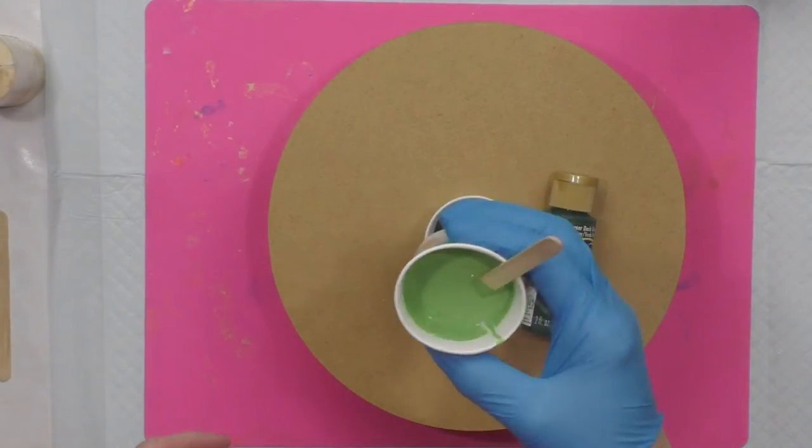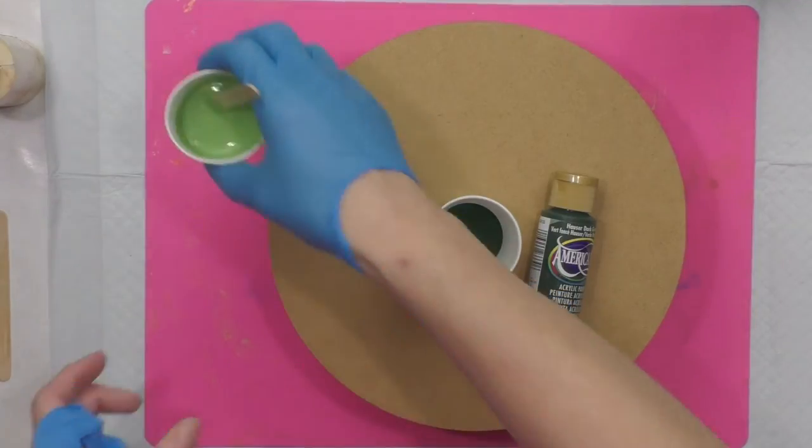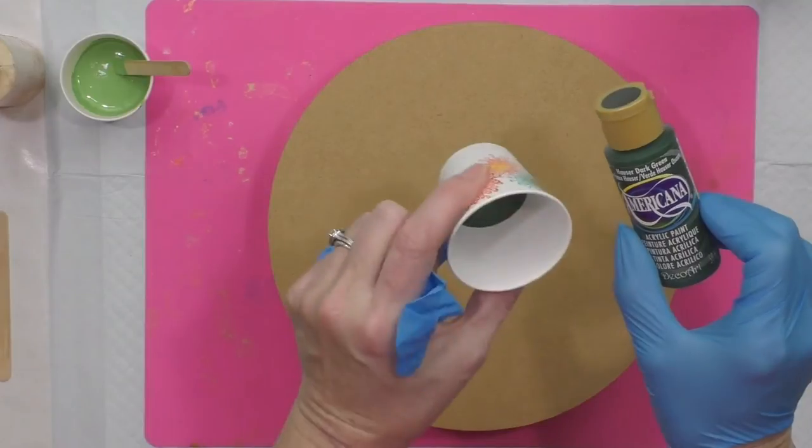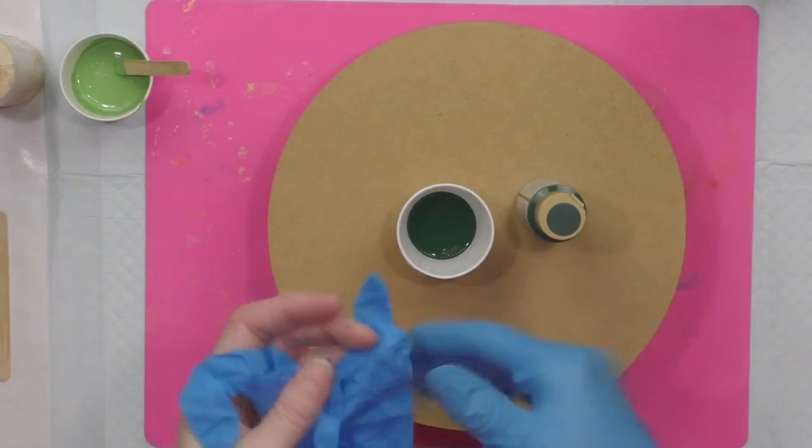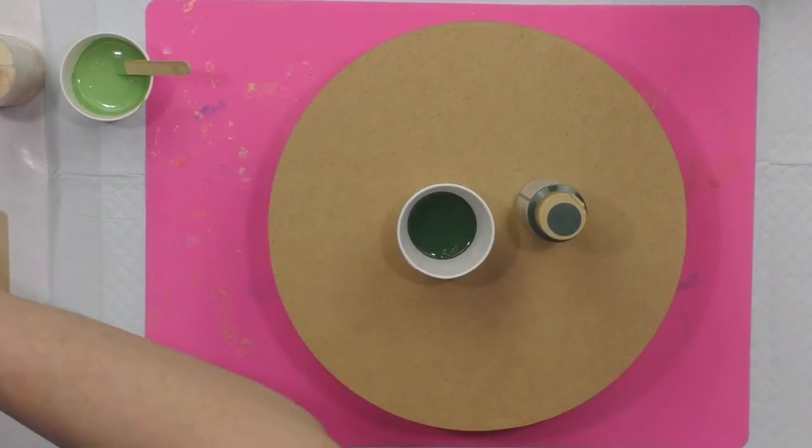Today I'm pouring a camouflage round circle with camouflage colors that I just chose pictures of from Google. I'm going to mix this Hauser Dark Green, which is a DecoArt paint, and I've got a kind of chocolate brown.